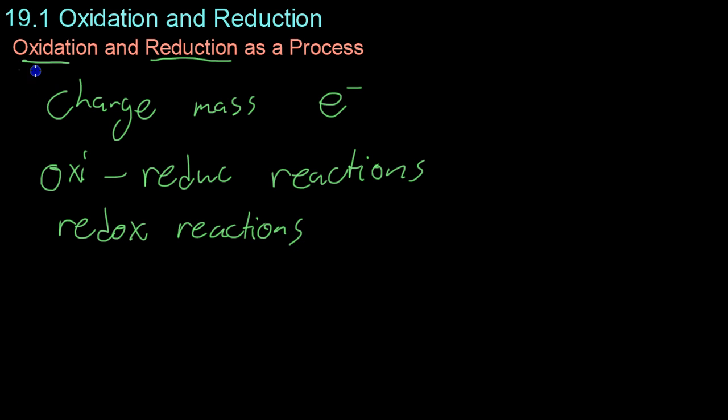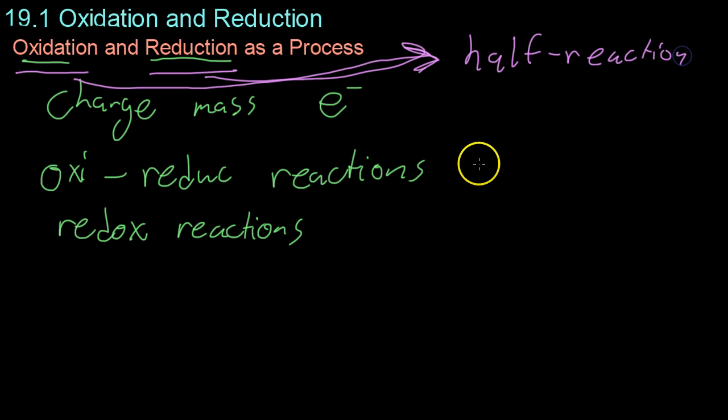However, if you write them alone, the oxidation and reduction without their opposing part, they're what are known as half-reactions. You can have the oxidation half-reaction. For example, if you take copper and then ionize it by removing two electrons to form a positive copper ion, this would be the oxidation half-reaction.